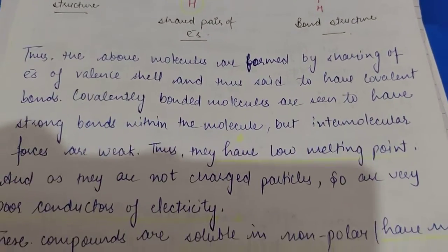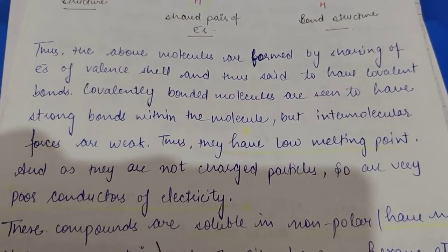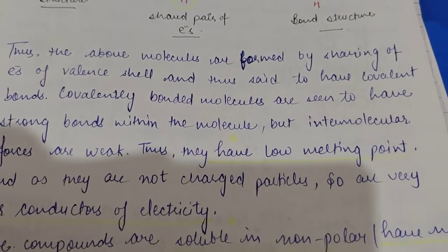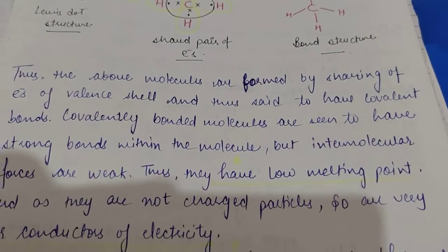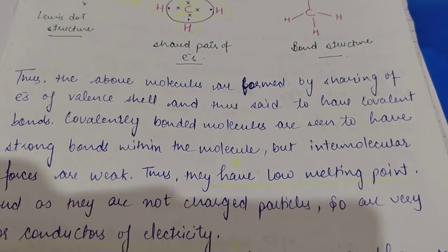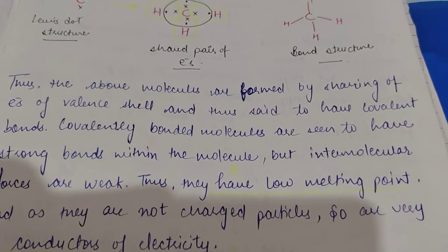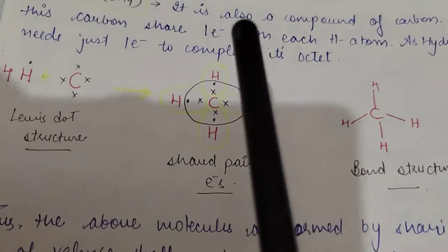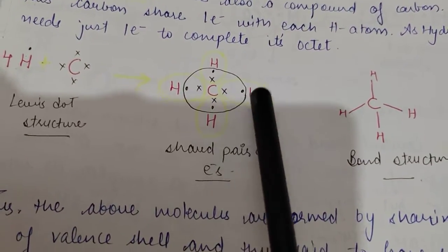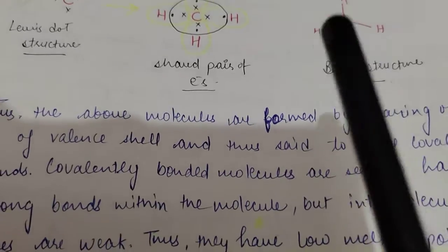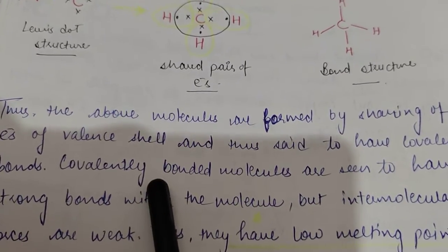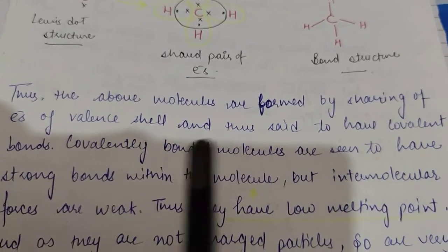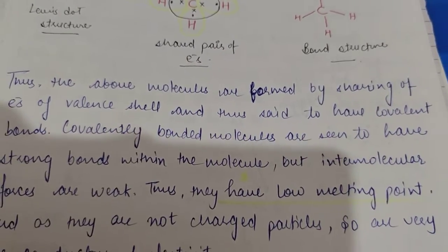Good morning everyone. In our previous video, we started with the chapter Carbon and its Compounds. We covered how carbon is very different from other atoms, and how it forms covalent bonds by sharing its valence electrons. So in all the molecules discussed, elements form bonds by sharing valence electrons, and thus they are said to have a covalent bond.